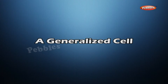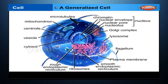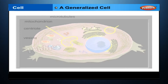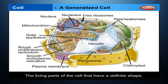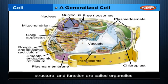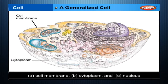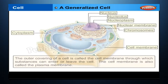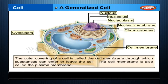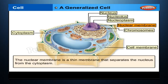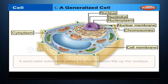A Generalized Cell. Though different types of cells differ in shape and size, all of them have a basic structure referred to as the Generalized Cell Structure. A cell has both living and non-living parts. The living parts of the cell that have a definite shape, structure and function are called organelles. The main parts of a generalized cell are: A. Cell Membrane, B. Cytoplasm, and C. Nucleus. The outer covering of a cell is called the cell membrane, through which substances can enter or leave the cell. The cell membrane is also called the plasma membrane.